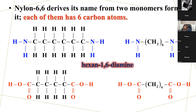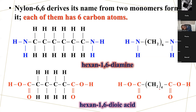I advise you as much as possible to write the open structures of these things. So let me show you how we arrive at these names. Diamine means that there are two amine groups. Where are they located? One on the first carbon and the other one on the sixth.